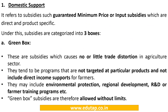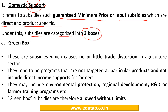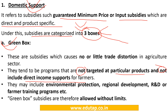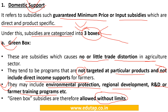The 1st pillar of WTO's Agreement on Agriculture is Domestic Support, which refers to direct and product-specific subsidies like Minimum Support Price or input subsidies. Under this, subsidies are categorized into 3 boxes: Green, Blue, and Amber. Green box subsidies are not targeted at particular products and don't include any direct income support for farmers, such as environmental protection, R&D, and farmer training programs. They are allowed without any limit because they cause no or little trade distortion in the agriculture sector.